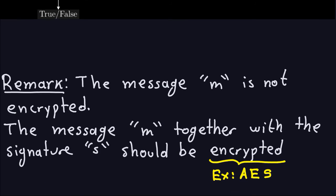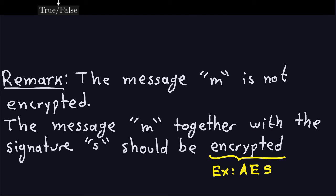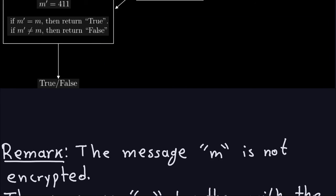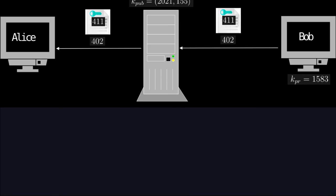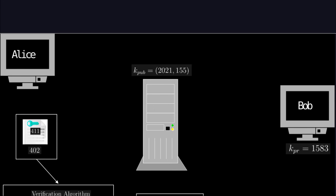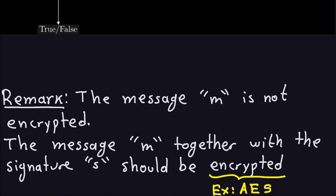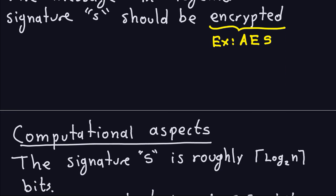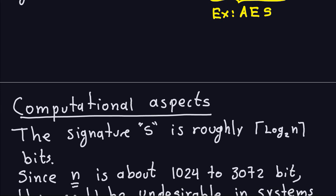An important remark: the message m is not encrypted. The message and signature s should always be encrypted — for example using AES — before sending over the channel. You should never send the message and signature in plain sight, since the purpose is secret communication. That's essentially how RSA signature works — it involves modular exponentiations, very similar to RSA encryption and decryption.